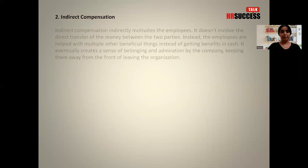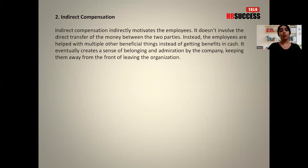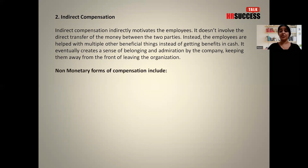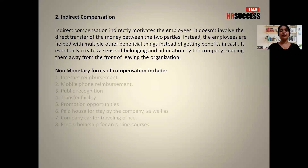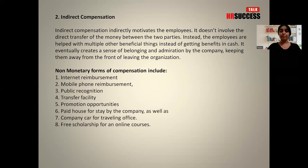The second type of compensation is indirect compensation. Indirect compensation indirectly motivates the employees — it doesn't involve the direct transfer of money between two parties. Instead, employees are helped with multiple other beneficial things. It eventually creates a sense of belonging, keeping them from leaving the organization. Examples are internet reimbursement, mobile phone reimbursement, public recognition, transfer facility, promotion opportunities, paid housing provided by the company, and a company car for traveling.